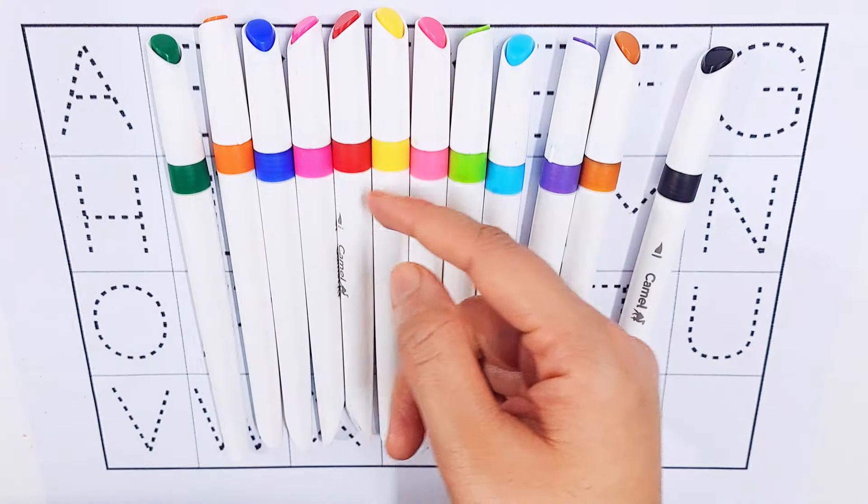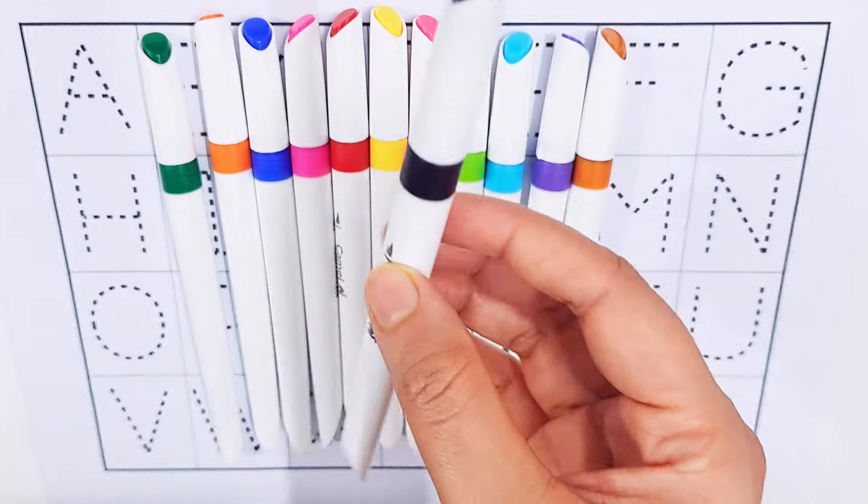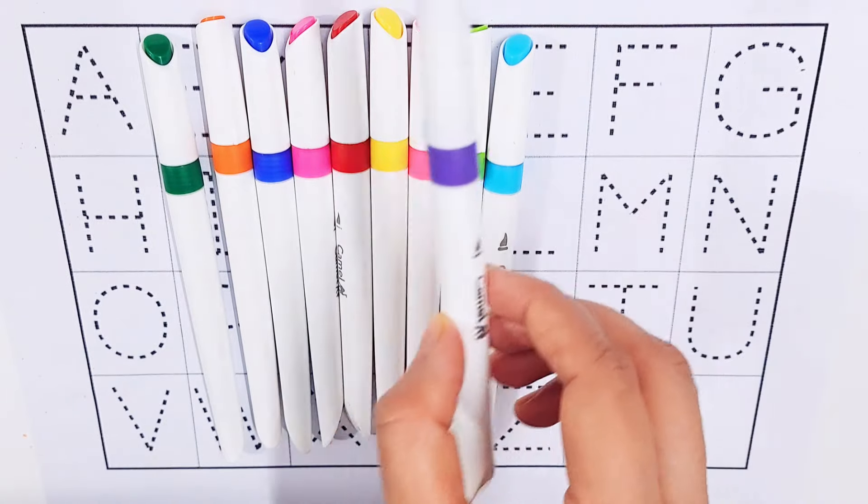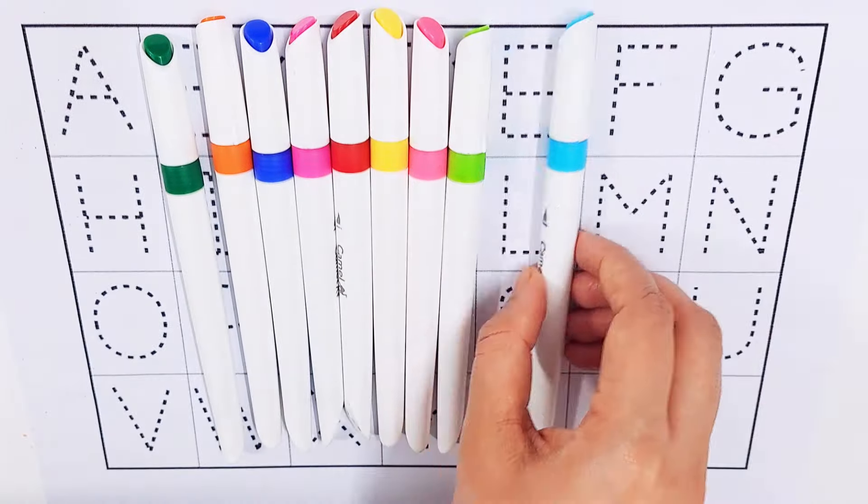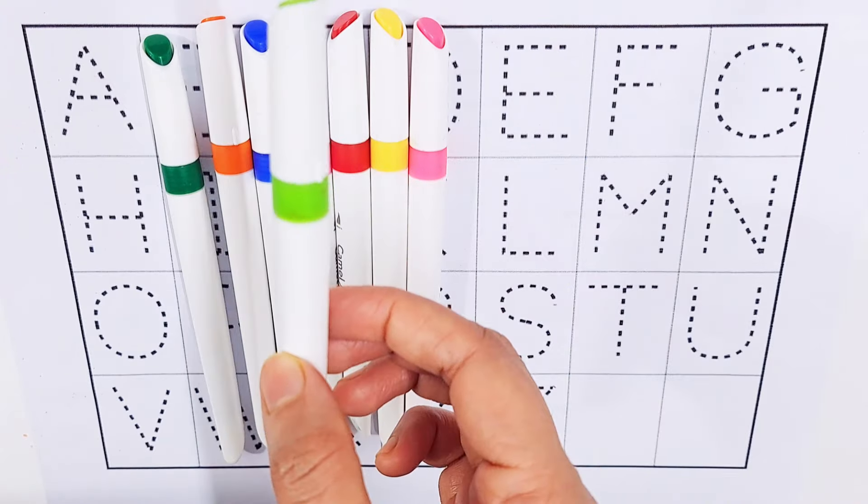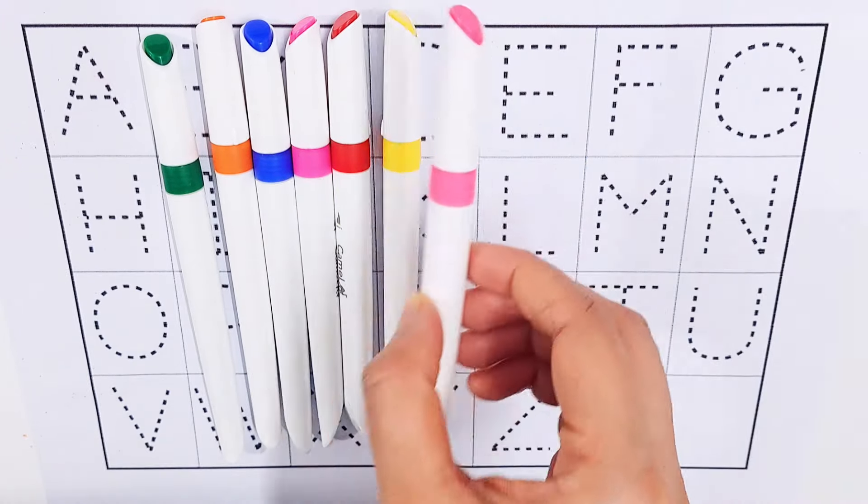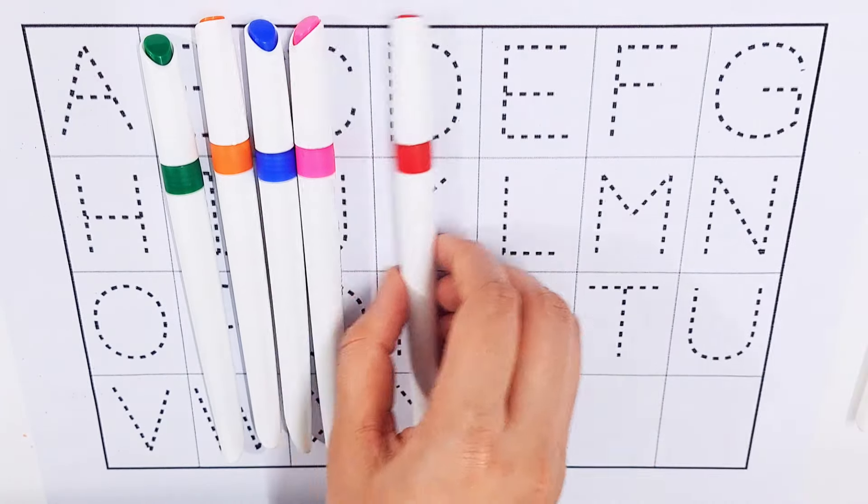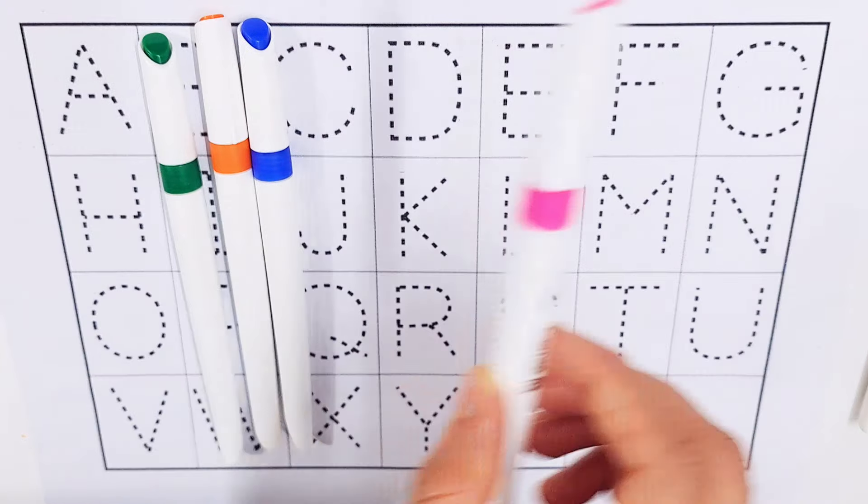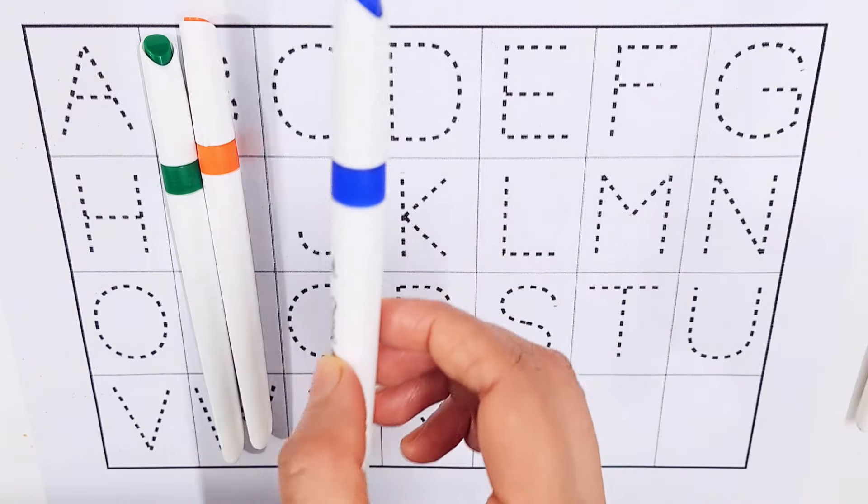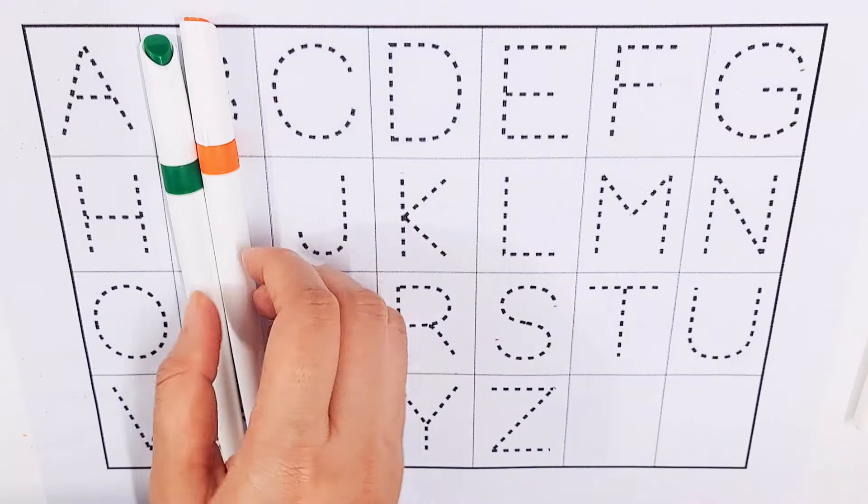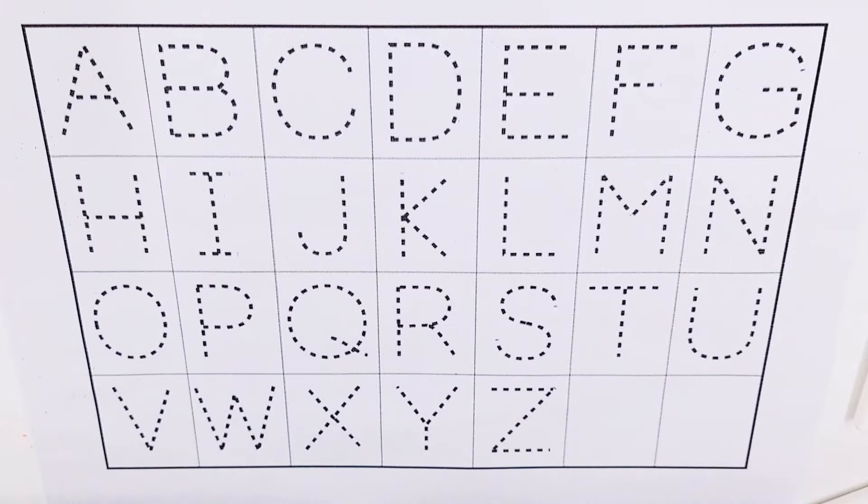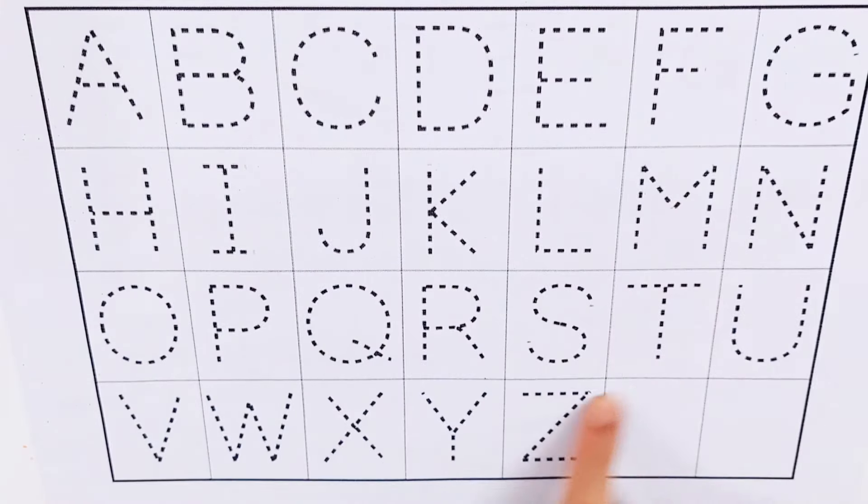Hello kids, let's learn some colors. Black color, brown color, violet color, sky blue color, light green color, pink color, yellow color, red color, purple color, dark blue color, orange color, the green color. Let's try to learn some alphabets.